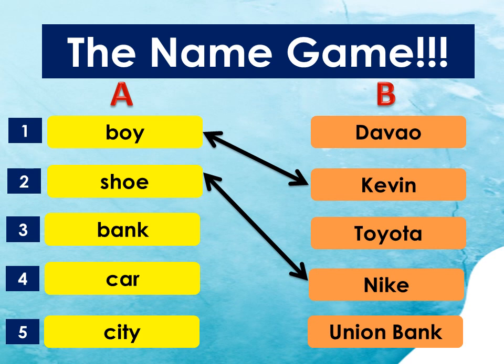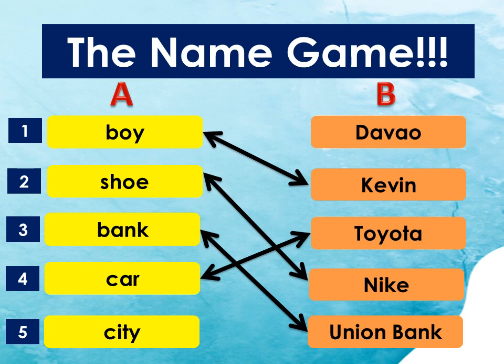Number 3: Which word in column B is the name of a bank? That's correct! It's Union Bank. Number 4: Which word in column B is the name of a car? That's correct! It's Toyota! Number 5: Which word in column B is the name of a city? That's correct! It's Davao!